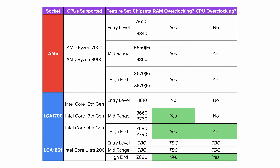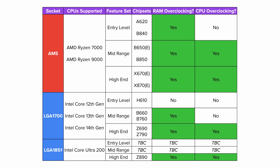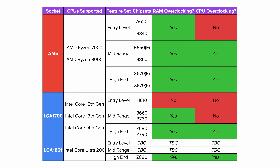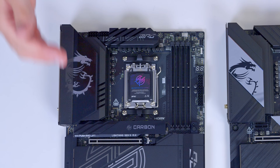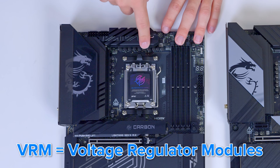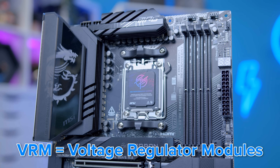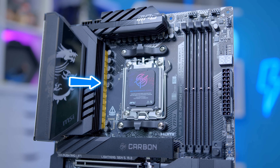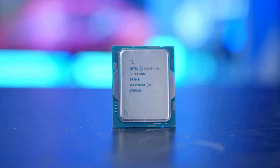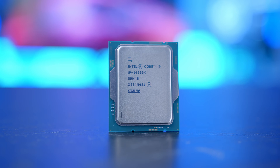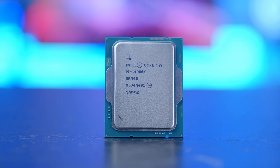Big differences include support for overclocking on the CPU and memory on the top-end Intel and top-end and mid-range AMD chipsets. Intel's lower-end chipsets are only going to support overclocking of the RAM. You'll also find that higher-end chipset boards have more VRM power phases — that's what delivers power from your CPU power ports to the CPU — allowing for better overclocking, or in the case of high-end CPUs, better power delivery when those chips are pulling their maximum load.